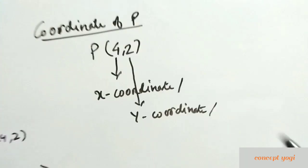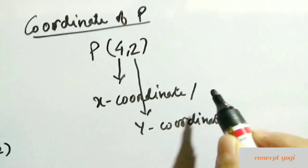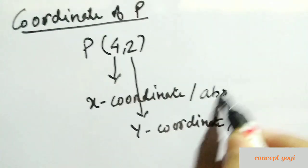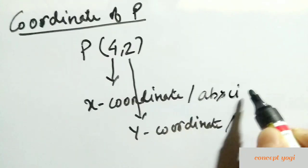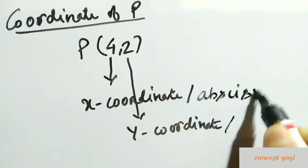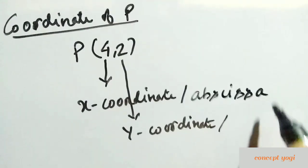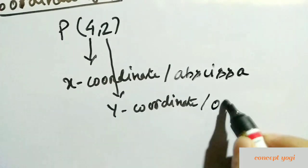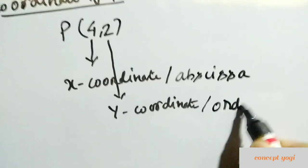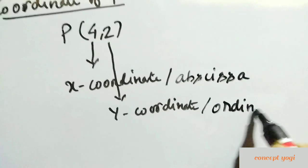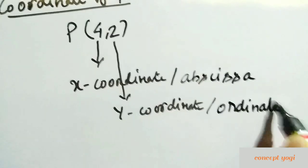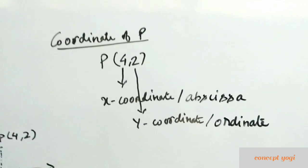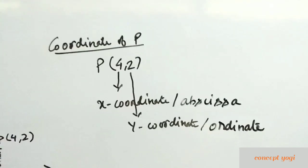The x-coordinate is also called the abscissa, and the y-coordinate is called the ordinate. So abscissa and ordinate are the different names for the x-coordinate and y-coordinate respectively.